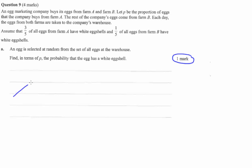So you're either hopping off to Farm A or Farm B. And they give us a proportion here. They say let P be the proportion of eggs that the company buys from Farm A. So that means one minus P eggs come from Farm B.